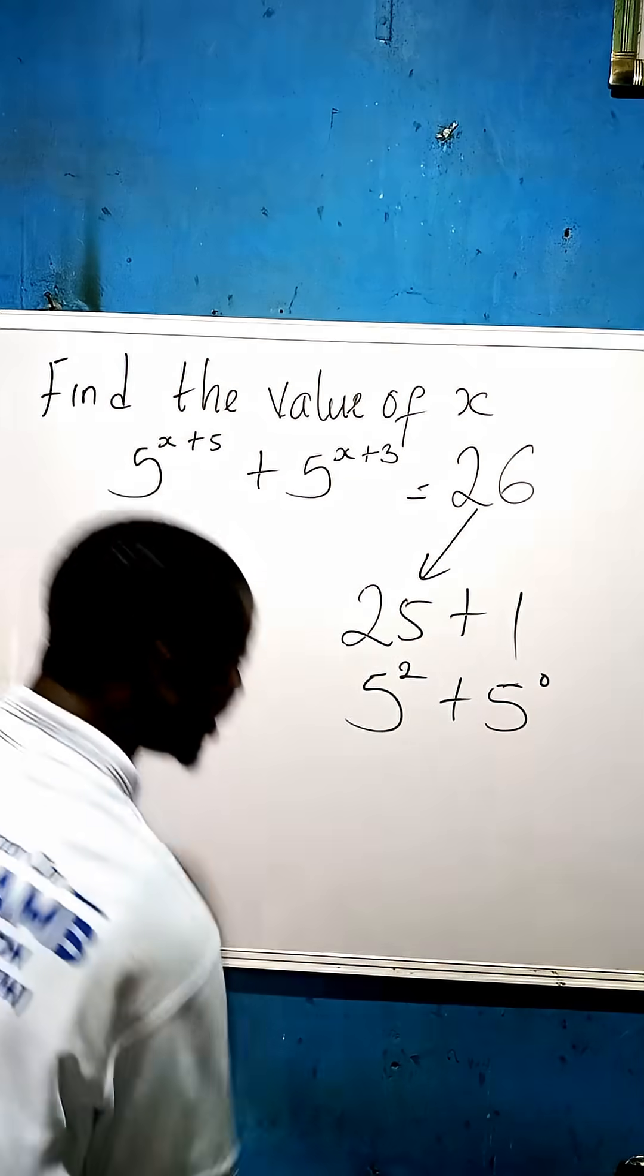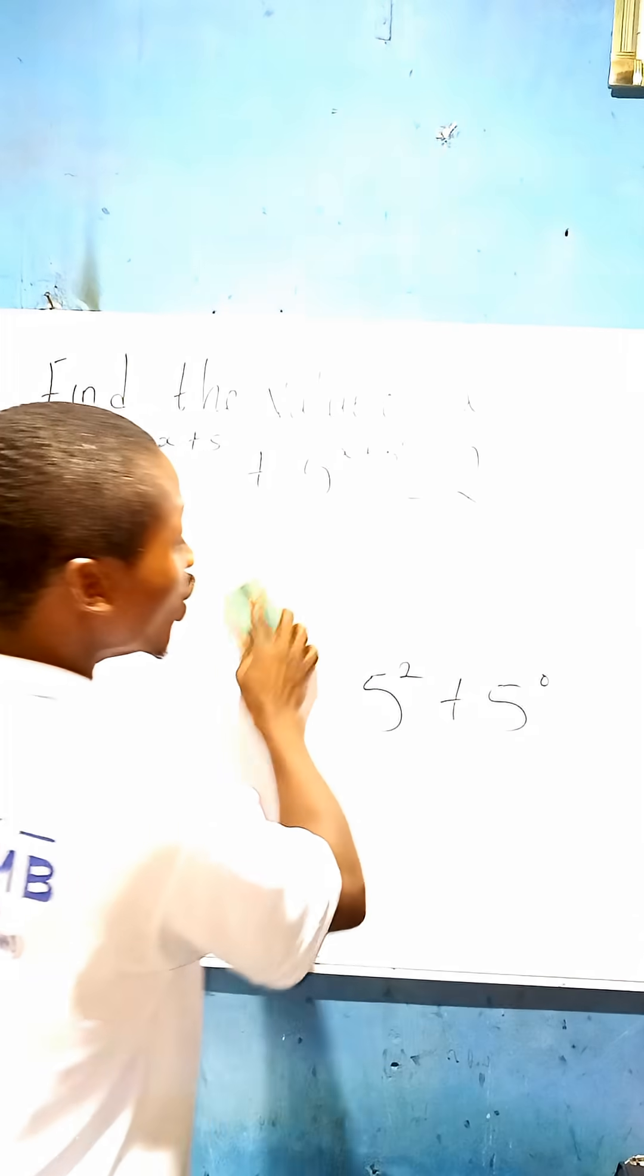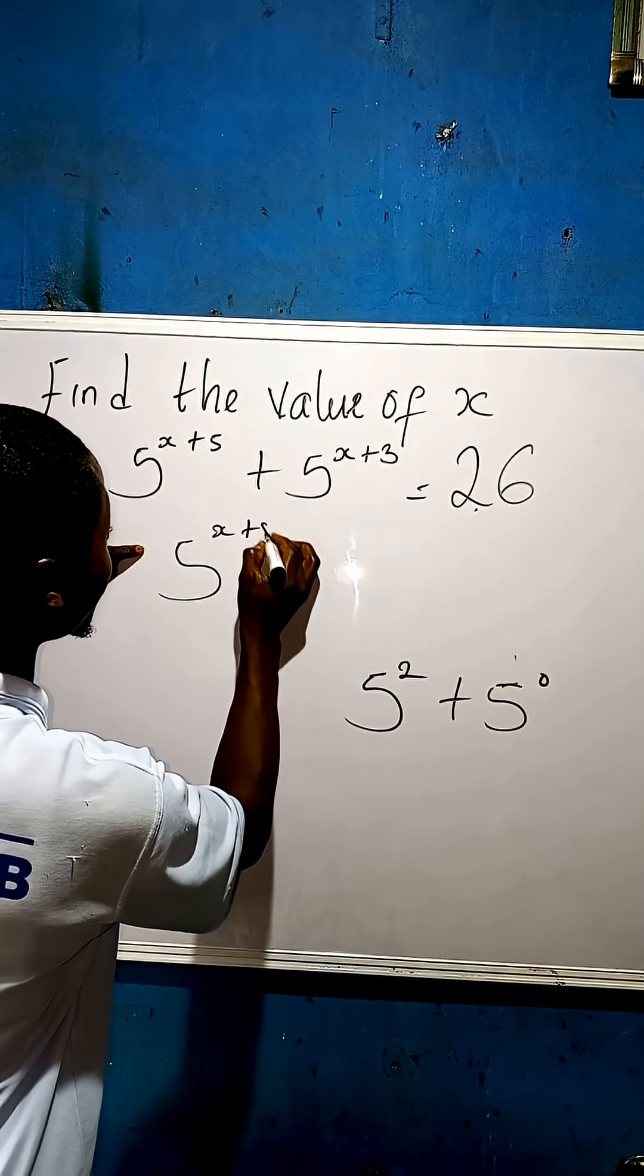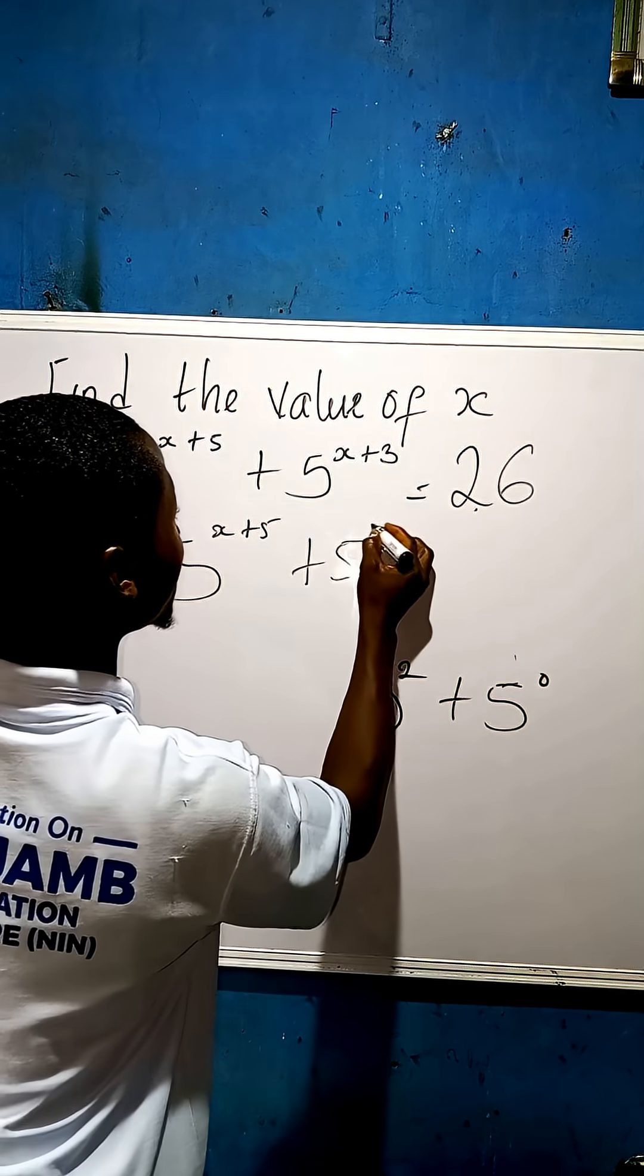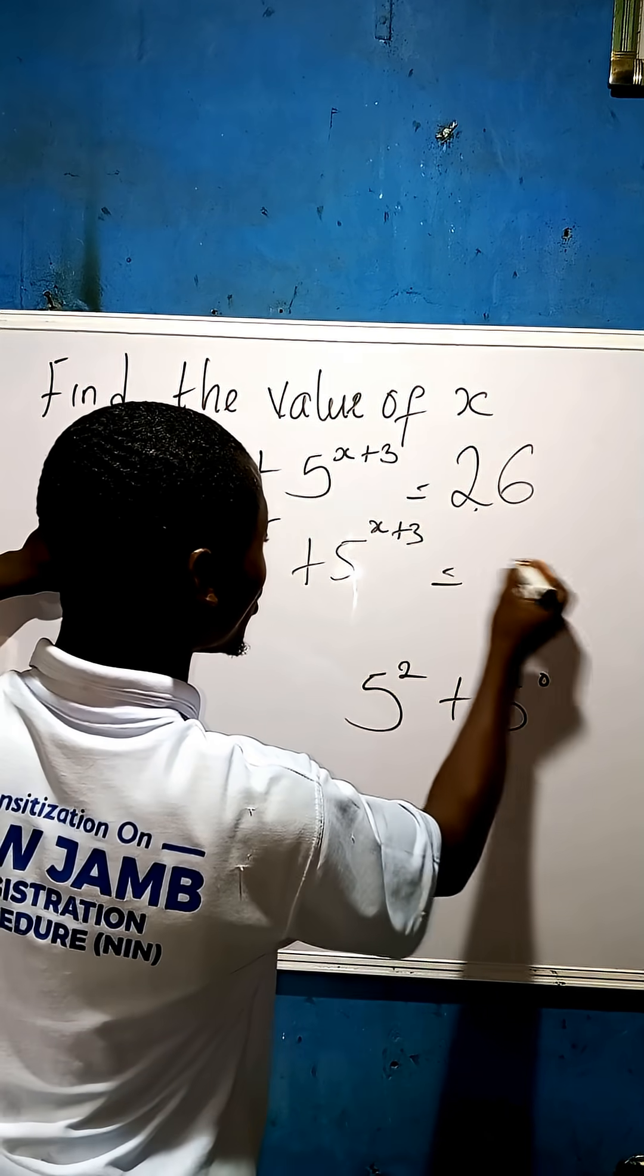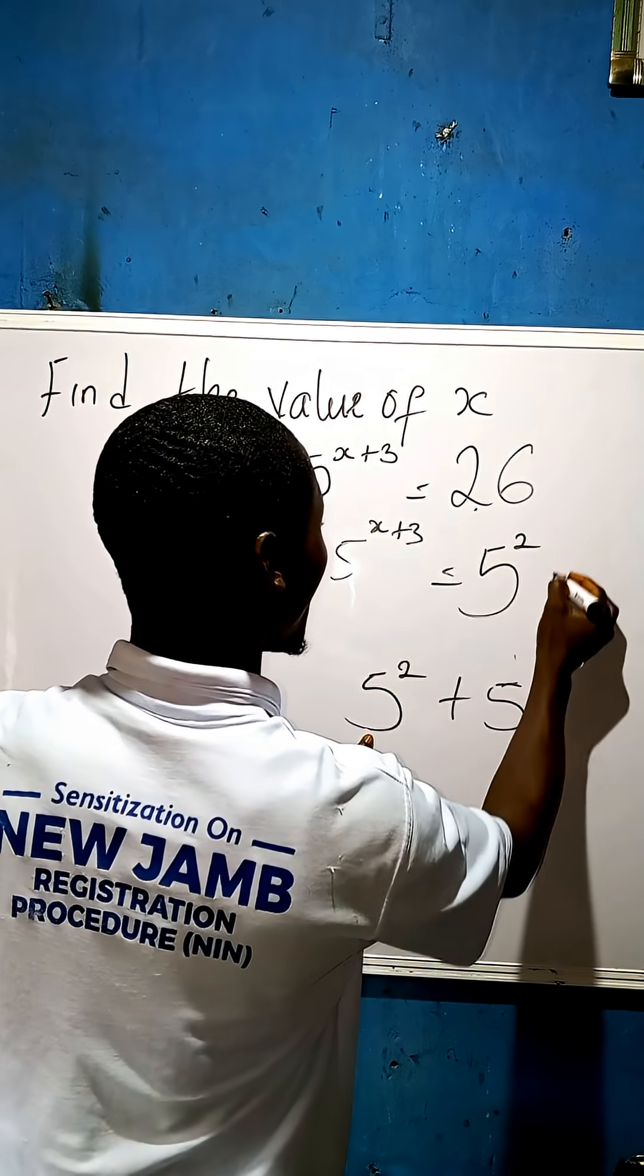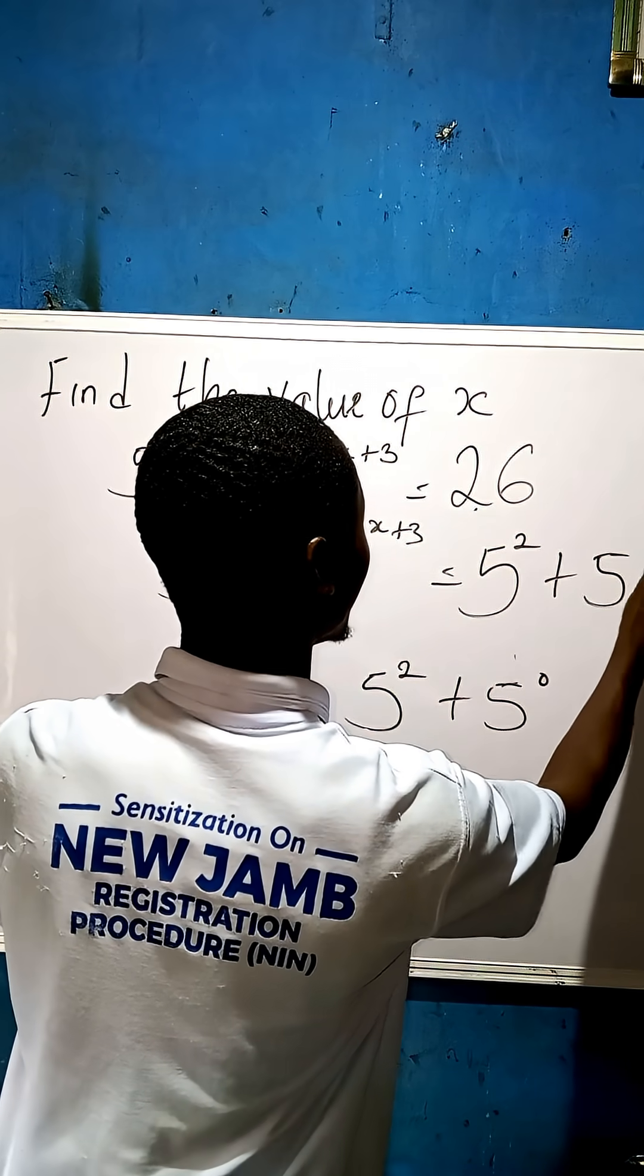You are going to see a magic jump. So now having done that, we are going to write all of this: 5 to the power of x plus 5, plus 5 to the exponent of x plus 3, equal to—instead of writing 26 now, we write this: 5 to the power of 2 plus 5 to the power of 0.